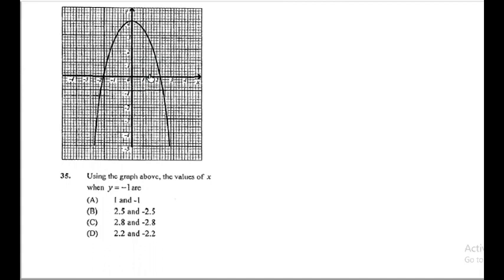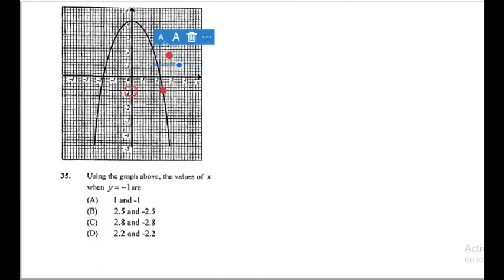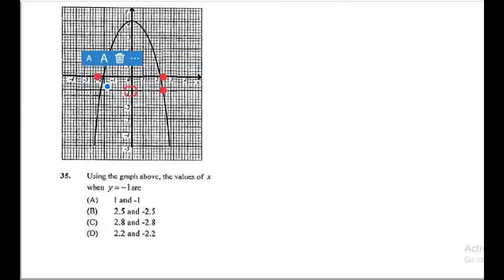Question 35: using the graph, the values of x when y equals negative 1. Negative 1 is exactly where I place the red circle. Extrapolate across to where negative 1 meets the lines on the graph, then up to the x-axis. You get 2.2 on one side and negative 2.2 on the other. Our answer is D.